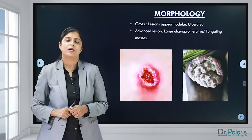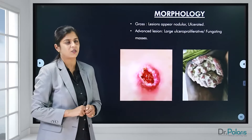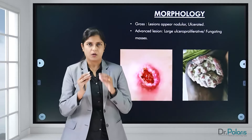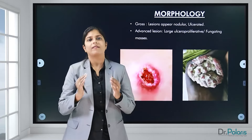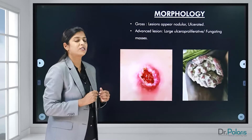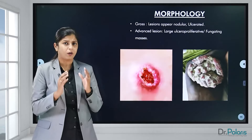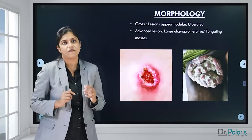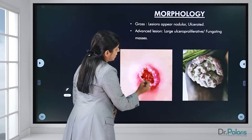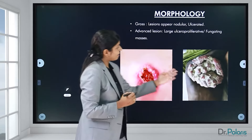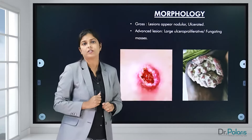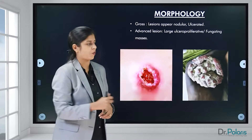Regarding the morphology of squamous cell carcinomas: grossly, these can be very small lesions, nodular lesions, or they can ulcerate. In advanced stages they can be very large ulceroproliferative or fungating growths, commonly called cauliflower-like growths. Some examples are nodular lesions with central ulceration, or a large cauliflower-like growth.